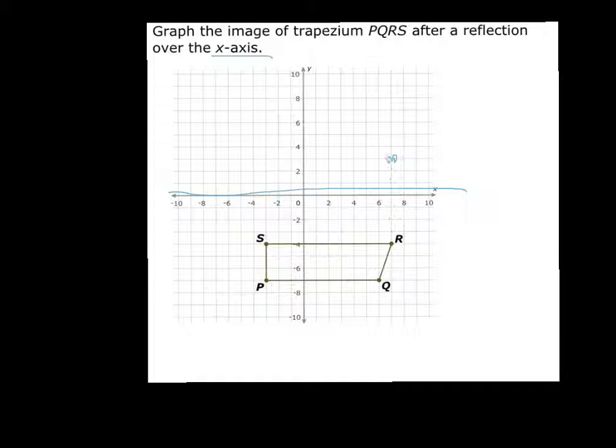So R will be there. Q will be 1, 2, 3 behind R. So 1, 2, 3, and then 1 over this way. So Q will be there.